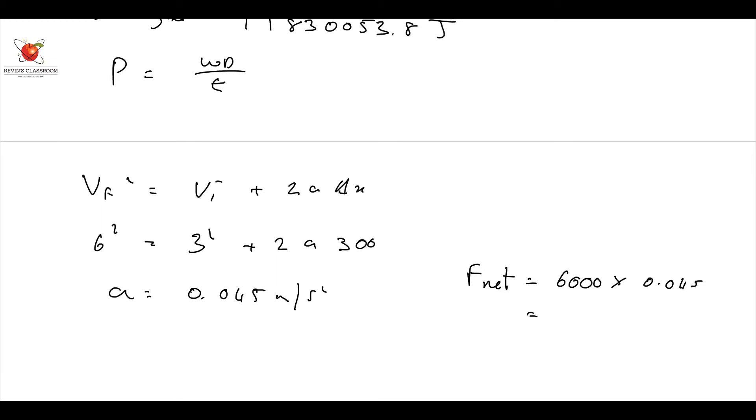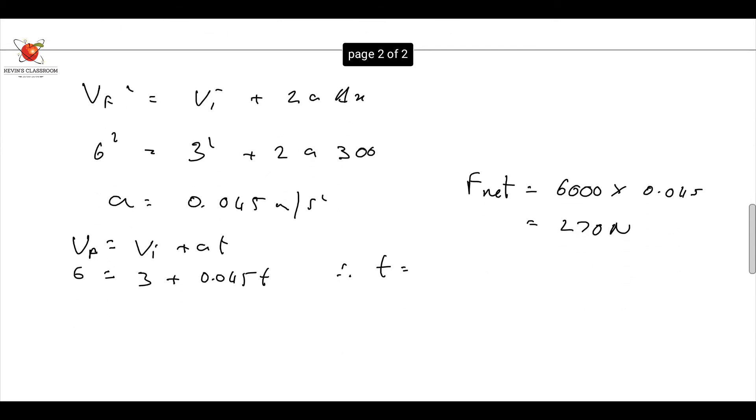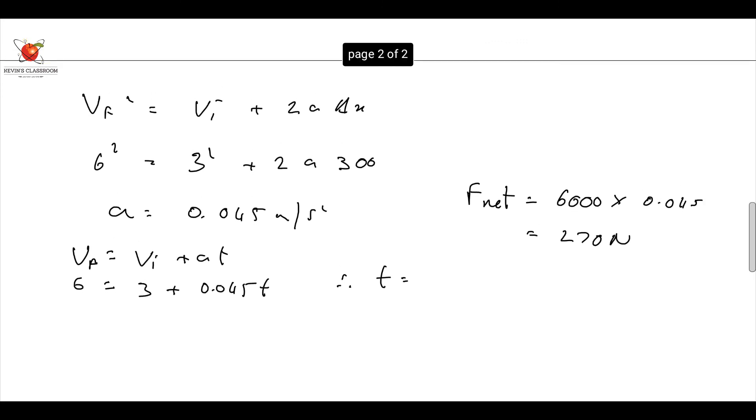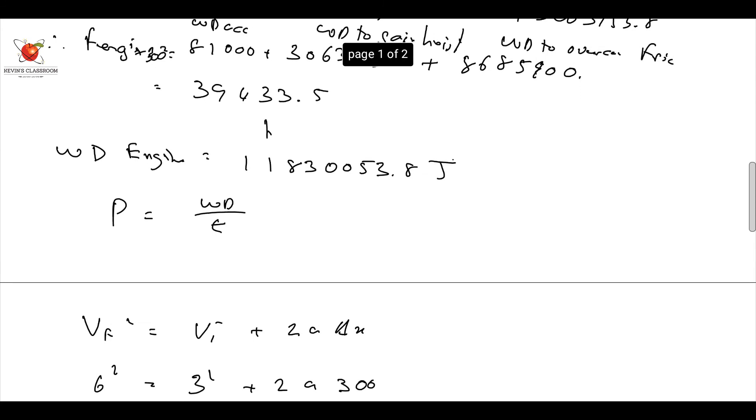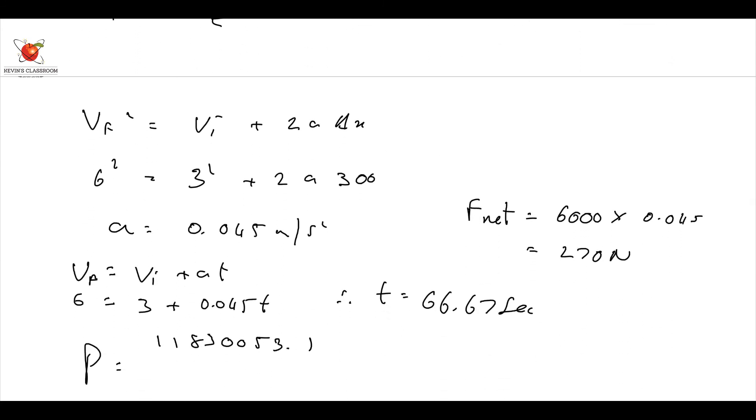Lastly, I say, all right, how long did it take me? V final equals V initial plus A times T. 6 equals 3 plus 0.045t. So, therefore, T is going to be equal to 66.67 seconds. 66.67 seconds is my time. Therefore, the power is going to be equal to 11830053.8 divided by 66.67, and it comes out to be 177.4 kilowatts.